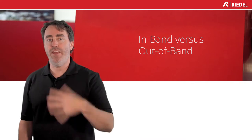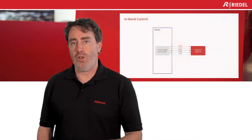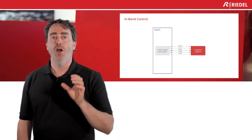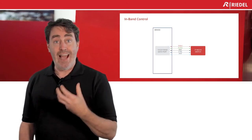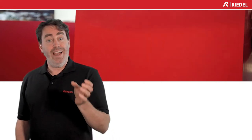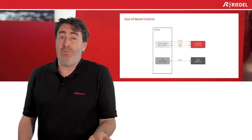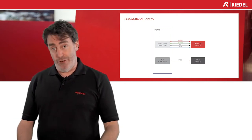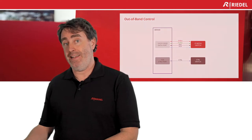So let's go with a definition to start. In-band control and management is sending control information within the same band or channel — in our case, the same network. In contrast, out-of-band, as its name states, is sending the control on a different network or a different band.